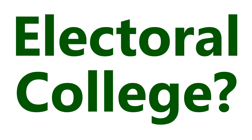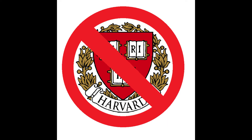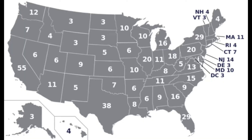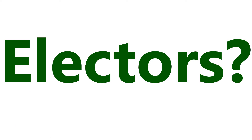Now, what in the world is the Electoral College? Unlike what I thought when I was younger, the Electoral College is not actually a college. It is actually a set of electors who are selected to elect a candidate to a particular office. In the United States, the Electoral College is composed of 538 electors.